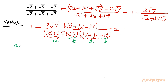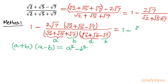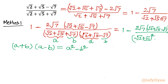Applying A plus B times A minus B equals A squared minus B squared: the numerator becomes 1 minus 2 root 7 in bracket, times root 2 plus root 5 minus root 7. The denominator becomes root 2 plus root 5 whole squared, minus root 7 whole squared.